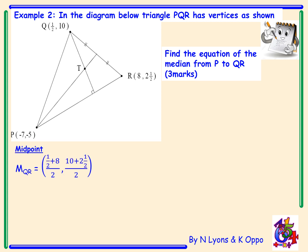The midpoint of QR: 1/2 plus 8 over 2, 10 plus 2 and a half over 2. This will give us an answer of 17/4, 25/4.